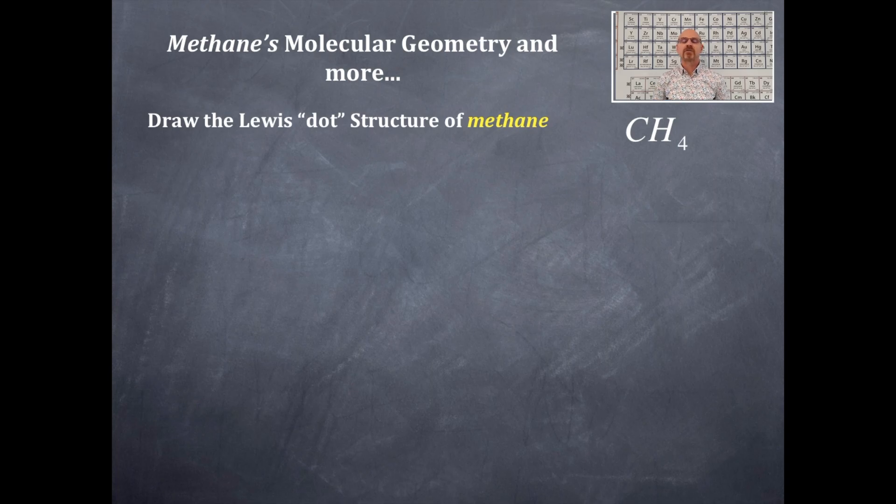Today we're talking about methane's molecular geometry and more. First, we need the formula for methane, then we'll draw the Lewis structure. Here is the formula for methane: CH4. From this, we'll look at the periodic table and determine the number of valence electrons for carbon and hydrogen, multiplied by the number of atoms. Sum those numbers to get the total number of electrons.